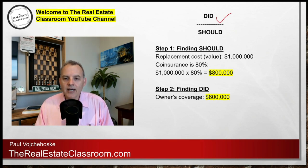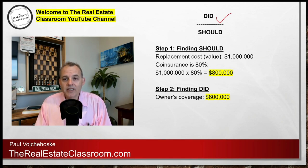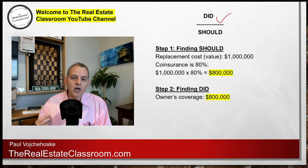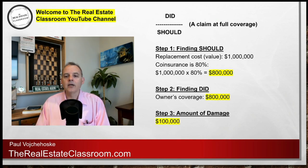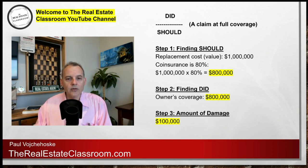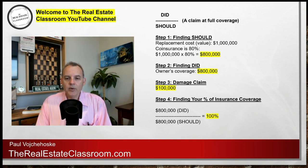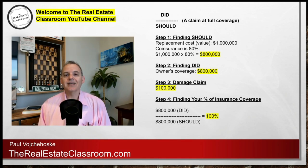Step two: we have to find out how much coinsurance coverage the owner actually had. In our example, the owner did have $800,000. So now we have the 'did' and the 'should' — the owner did have $800,000 in insurance coverage, and they should have had $800,000. Step three: we determine the amount of the claim submitted to the insurance carrier. A storm came through and there was $100,000 in damages. We now have all the essential elements. Step four: using our formula, we take $800,000 divided by $800,000, which gives us a coinsurance coverage ratio of 100%.